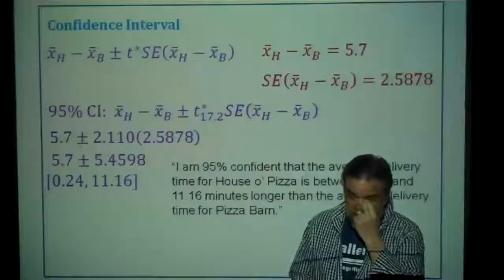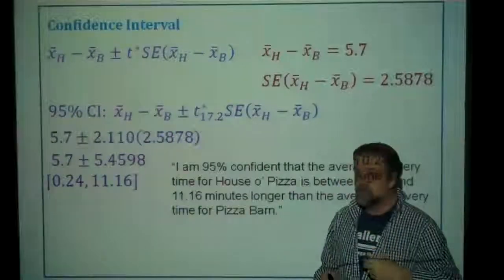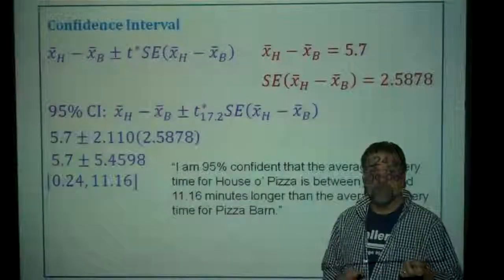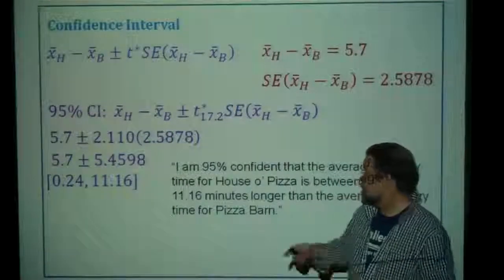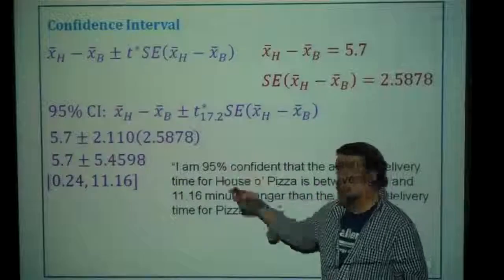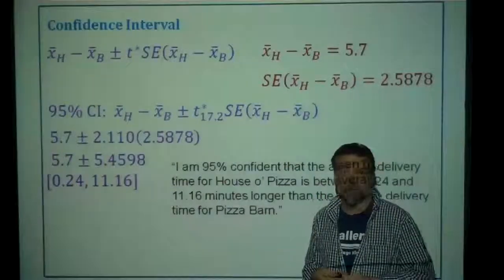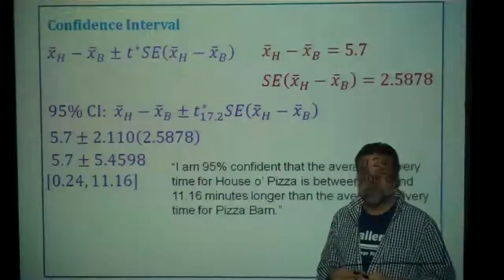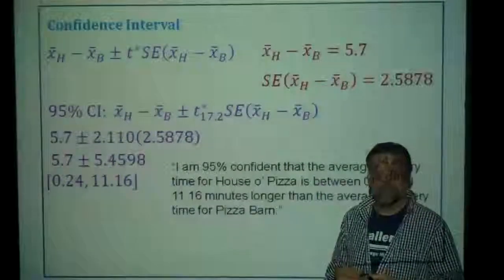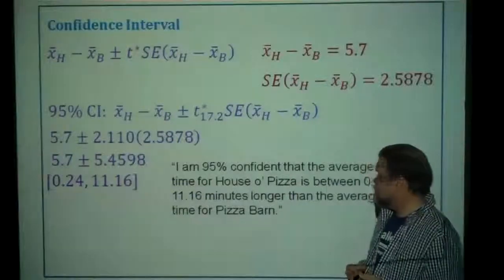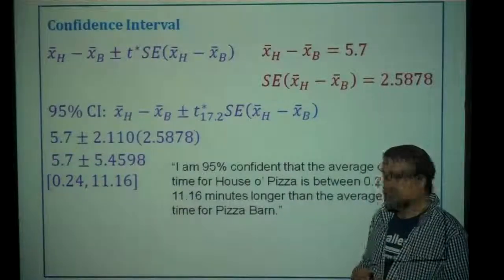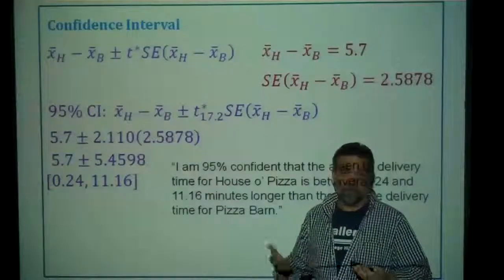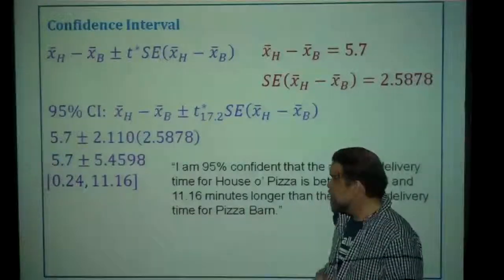If only there were something we could do to make that interval smaller. There is: either decrease your confidence level — say use a 90% interval, though you'd be less confident — or increase your sample size by ordering more pizzas. But in this particular case, there's actually one more option.